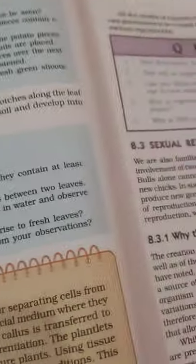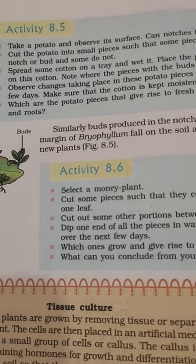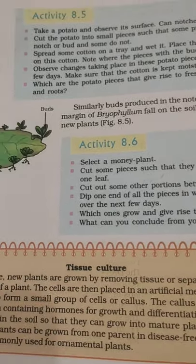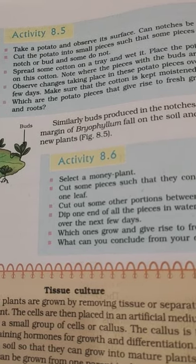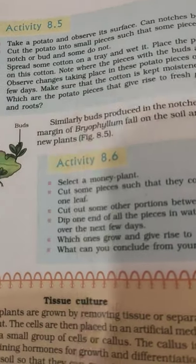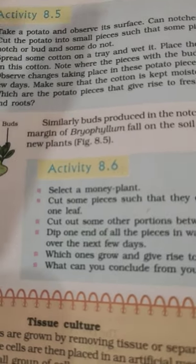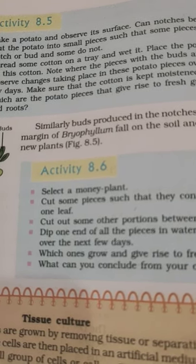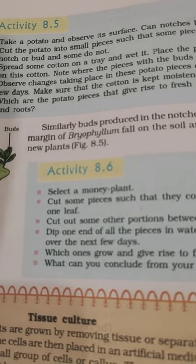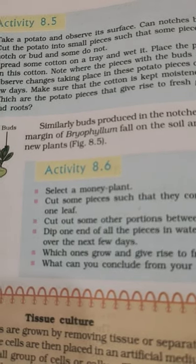In Activity 8.5, we take a potato. In winters, potatoes develop whitish or greenish portions called buds or notches. We cut the potato into pieces where every piece has those buds or notches. If we keep those pieces in cotton or soil, we can see a new plant — a new stem — arising from those buds, making it an example of vegetative propagation.